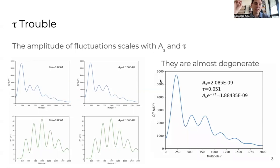The problem with those two parameters is they're actually quite degenerate. If you fix the product AS e to the minus 2 tau, and you vary AS and tau, then you don't see any difference in the temperature power spectrum, which is why it's been very difficult to constrain tau, and which is why it's a major barrier to constraining the primordial amplitude of fluctuations.